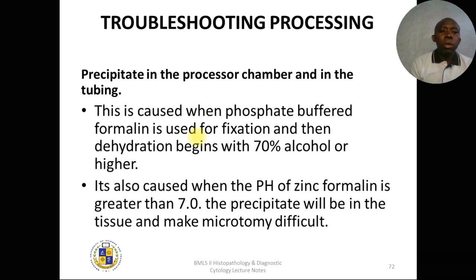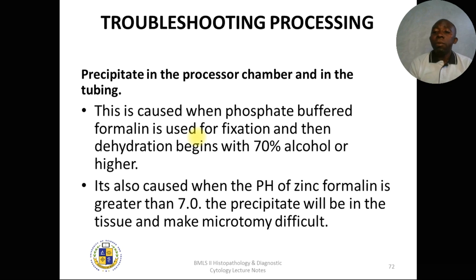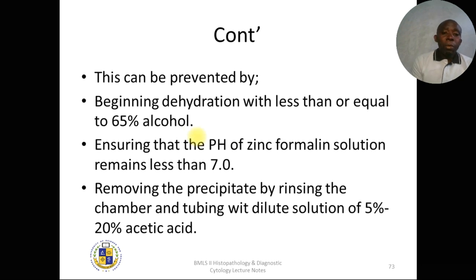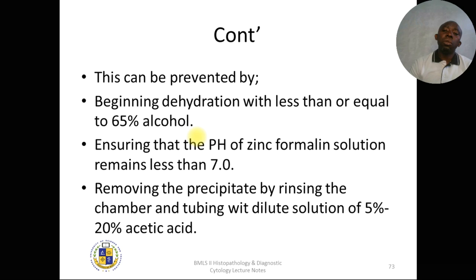Troubleshooting: if precipitate is found in the processor chamber and tubing, it may be caused by using phosphate-buffered formalin for fixation followed by dehydration beginning at 70% alcohol or higher, or when the pH of zinc formalin is greater than 7.0. This can make microtomy difficult. Prevention involves beginning dehydration with ≤65% alcohol and ensuring the pH of zinc formalin solution remains at exactly 7.0.